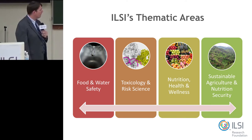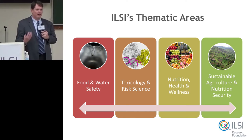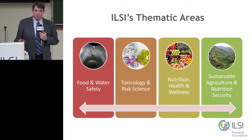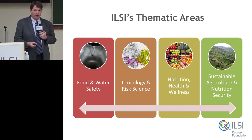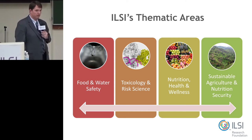Those four thematic areas range from food and water safety through toxicology and risk science, nutrition, health and wellness, and sustainable agriculture and nutrition security. Nutrition security is the new term for food security — the attempt is to incorporate not just calories so that people survive, but also adequate nutrition so they're able to live healthy lives to their full potential. Biotechnology and agricultural biotechnology intersects with all of these thematic areas in some way, which illustrates just how important the topic is.